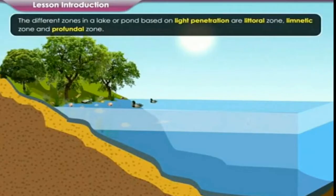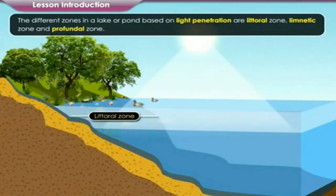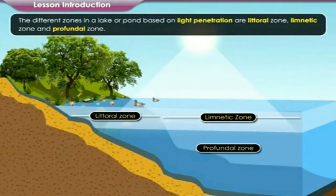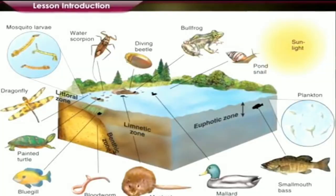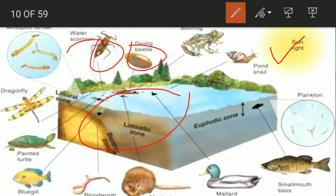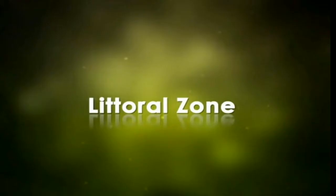The different zones in a lake or pond are based on light penetration. These are: the littoral zone, the limnetic zone, and the third one is the profundal zone. Different factors like light, soil content, available food, and oxygen affect the organisms and their population in different ways in these zones.